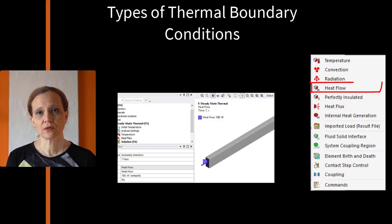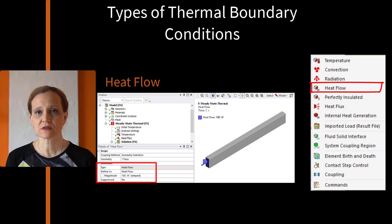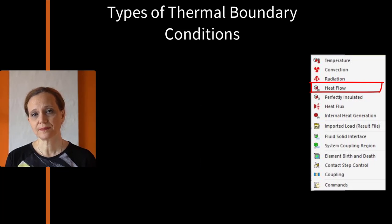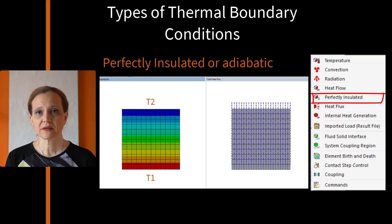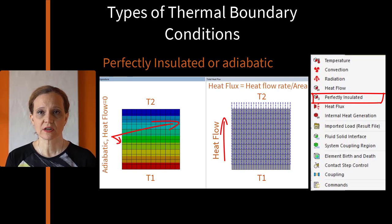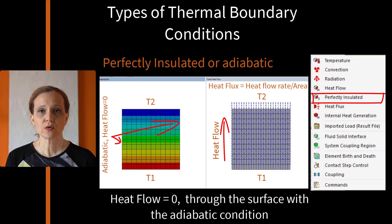Heat flow simulates the transmission of the heat across the surfaces or edges or vertexes and, as a result, adds energy to the body. Perfectly insulated or adiabatic condition is naturally occurring boundary condition when no load is applied to the face, the heat flow rate through the face is zero.